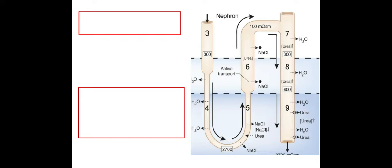The loop of Henle — numbers three, four, five, and six in this image — is split up into the ascending limb and the descending limb. The ascending limb is numbers five and six, where the fluid is going upwards, and the descending limb is numbers three and four, where the fluid is going downwards.